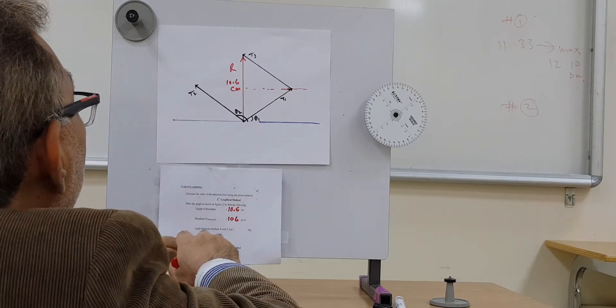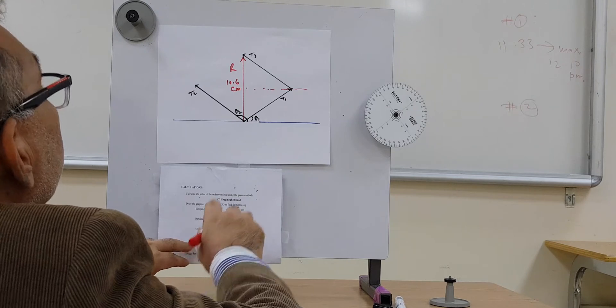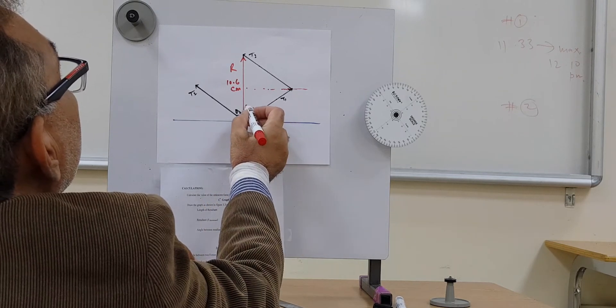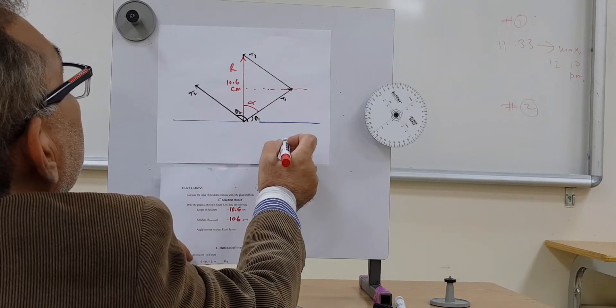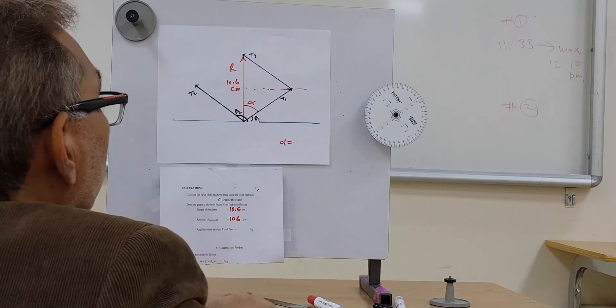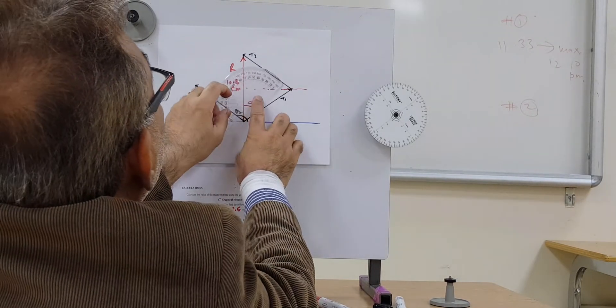Now, angle between the resultant and T1. This angle you have to measure and write down.